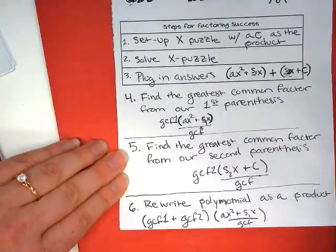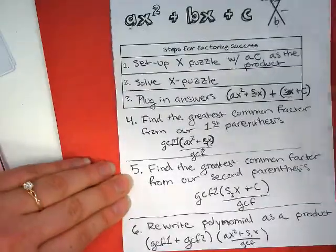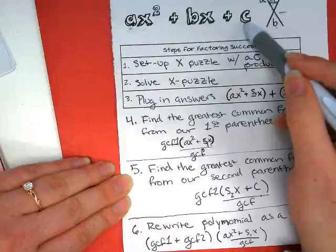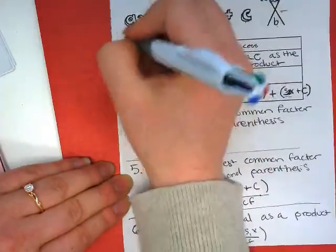So those are the steps to factoring a polynomial for ax squared plus bx plus c when a is greater than one.